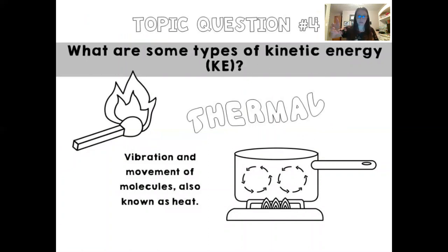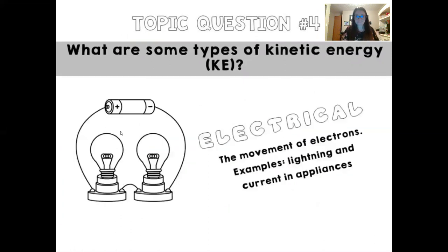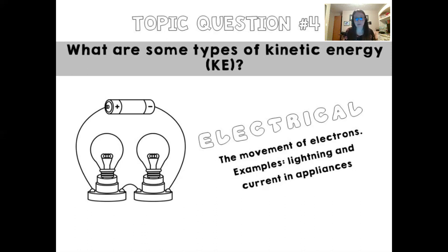A different type of kinetic energy is thermal energy — the type responsible for cooking food and convection heating. The energy in matches is thermal energy. Electrical kinetic energy involves the movement of electrons in wires or conductive materials. Examples include lightning or electrical current in your appliances. We usually do a circuit lab in physical science, but with online learning we didn't have time — I encourage you to look up experiments on how to build your own circuit from household items.